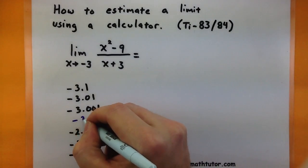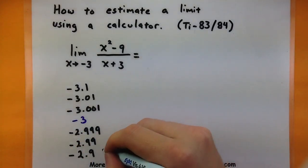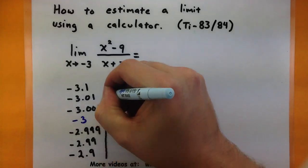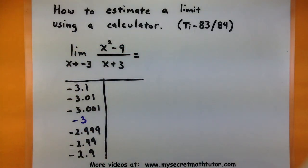Now, I'm also going to put negative 3 here on my table, even though we won't use that in our calculator, but I'm basically using it as a placeholder to say, hey, look at where my x values are getting close to.